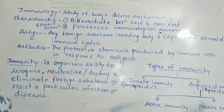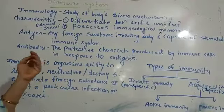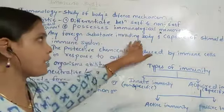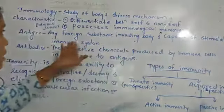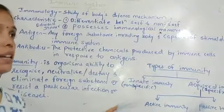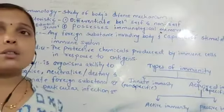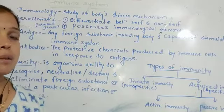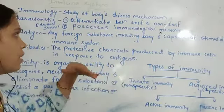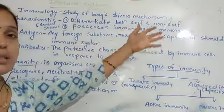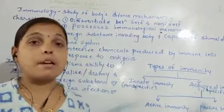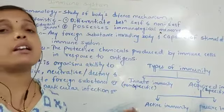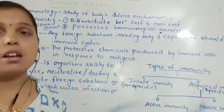An antigen is any foreign substance invading the body that is capable of stimulating the immune system. Any substance or microorganism that enters the body will stimulate the immune system so that it produces chemicals — these chemicals are produced in response to the antigen.